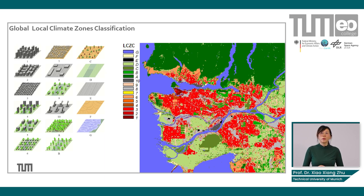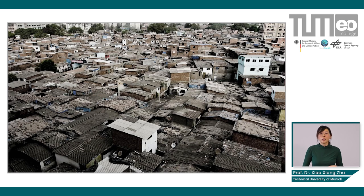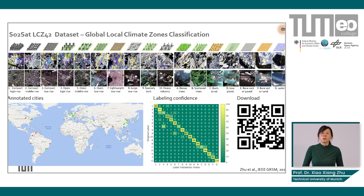This information helps understand local climate and urban morphology. For example, in Vancouver, high-rise compact areas correspond to city centers (class 1), while lightweight low-rise areas (class 7) reflect how slums look. This gives us a way to identify where informal settlements are located globally. To do this mapping, the first step is creating annotation datasets, for which we selected 42 cities across the globe covering all cultural zones.